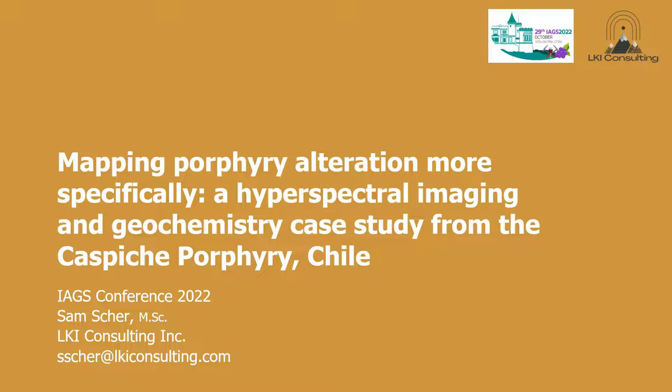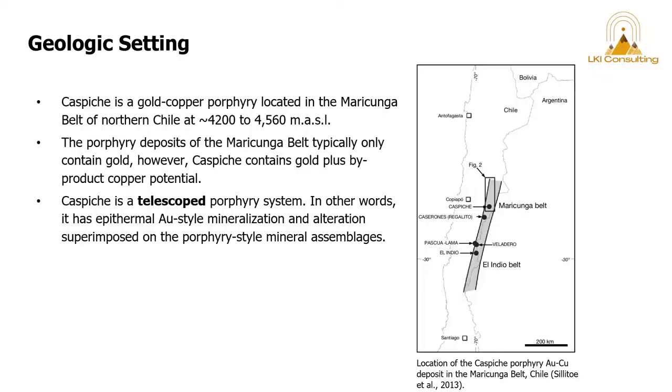So ciao sericite and bienvenido mica blanca, illite, and montmorillonite. These next few slides I want to acknowledge for context of where the Caspiche porphyry is located as well as published information on it. So here we can see that Caspiche is a gold-copper porphyry located in the Maricunga belt of northern Chile at approximately 4200 to 4500 meters above sea level.